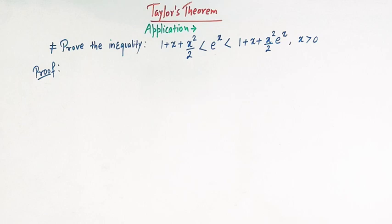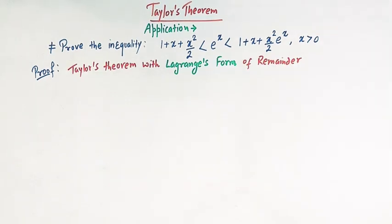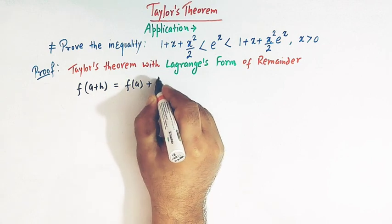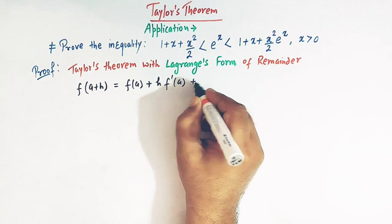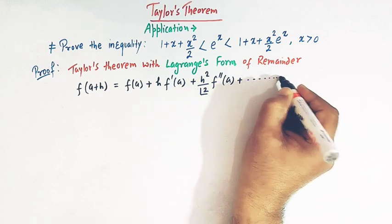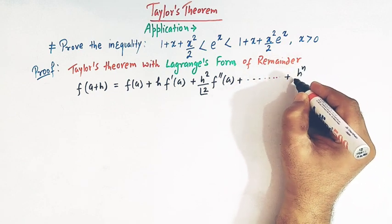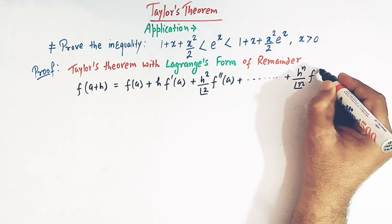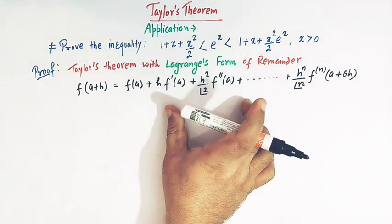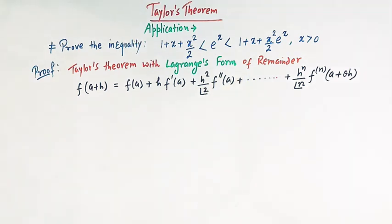We'll use Taylor's theorem with Lagrange's form of remainder. Taylor's theorem states: f(a + h) = f(a) + h·f'(a) + h²/2!·f''(a) + ... + hⁿ/n!·fⁿ(a + θh). This is the statement of Taylor's theorem with Lagrange's form of remainder.